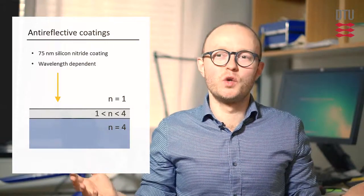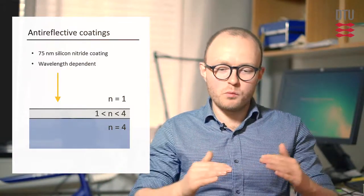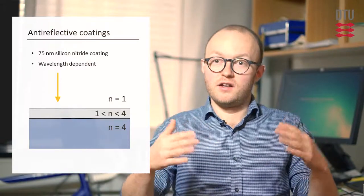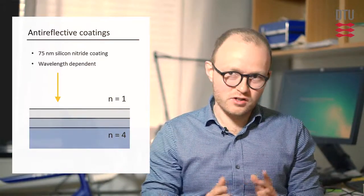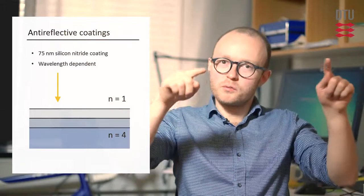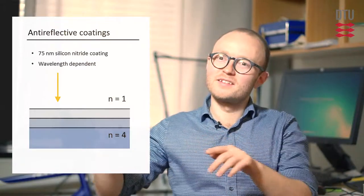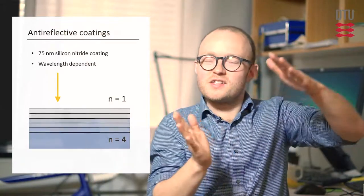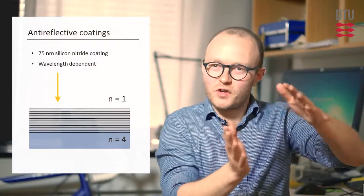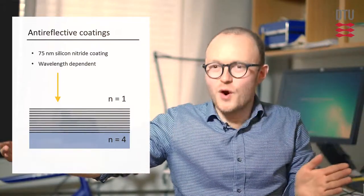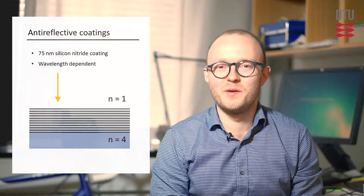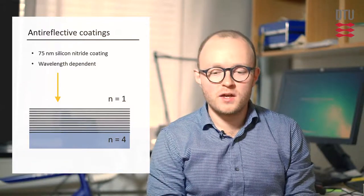Now, if cost wasn't an issue and we could do whatever we wanted, maybe if we wanted to add an additional layer, an additional anti-reflective coating, then we could in principle minimize two wavelengths. And if we could increase that and have an infinite number of anti-reflective coatings, we could start getting a broadband minimization of the reflection.